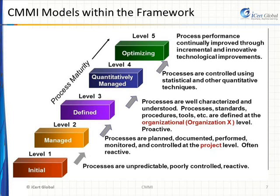The image on the slide represents the different levels in the Process Maturity Framework. Please pay attention to the information related to the process at every level. For instance, at level 1 the processes are totally unpredictable, while at level 3 processes are well characterized and understood. Level 5 is really impressive, with continual improvements in process through incremental and innovative improvements.